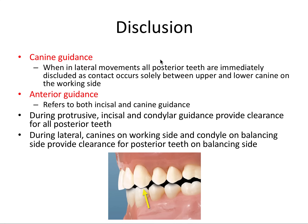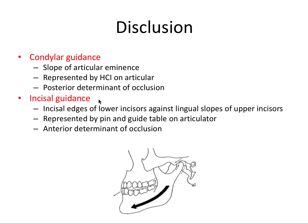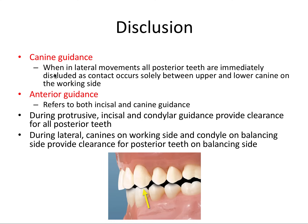Canine guidance describes what happens when the patient moves the jaw from side to side. In lateral movements, all posterior teeth are ideally immediately discluded as contact occurs solely between the upper and lower canine on the working side — the side the mandible is moving toward. The canines are well equipped for this: they have the longest roots of all the teeth and are built to handle that lateral stress.